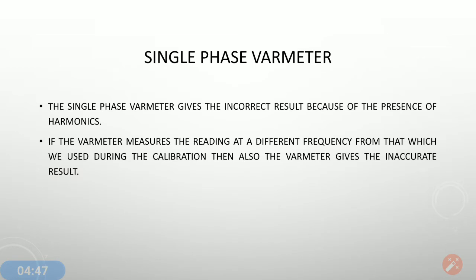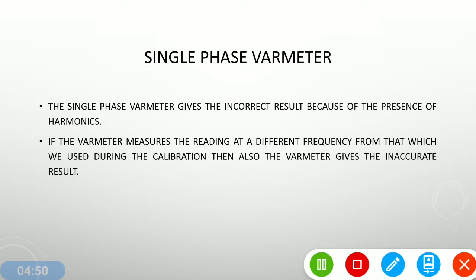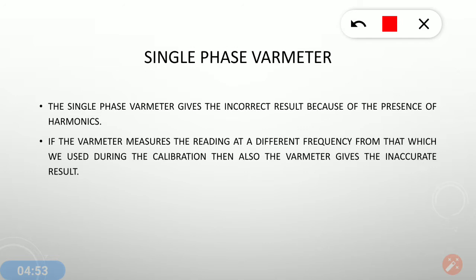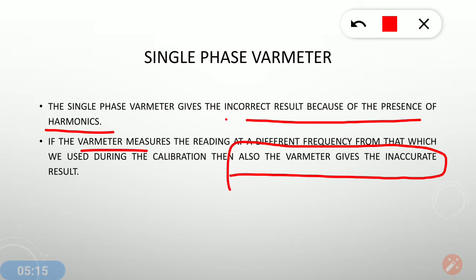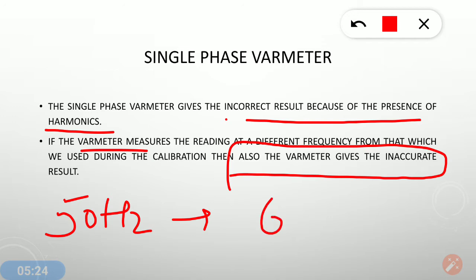There is a disadvantage of the single phase VAR meter: it produces incorrect results because of the presence of harmonics. Also, if the VAR meter is used at a different frequency from the one used during its calibration, it will give inaccurate results. For example, if the meter is calibrated for 50 Hz and you are measuring power at 60 Hz, it will definitely give erroneous results.